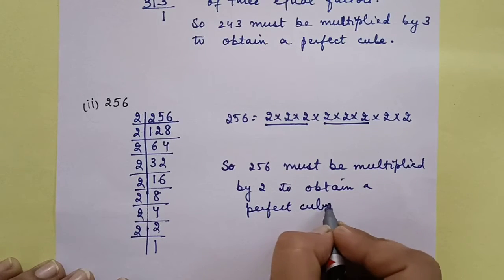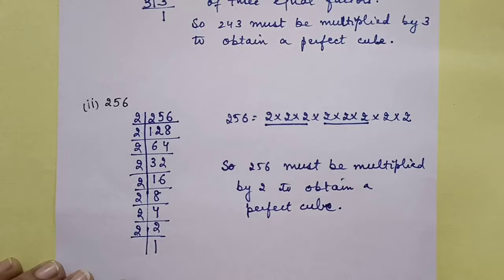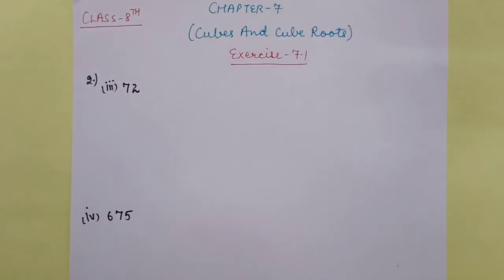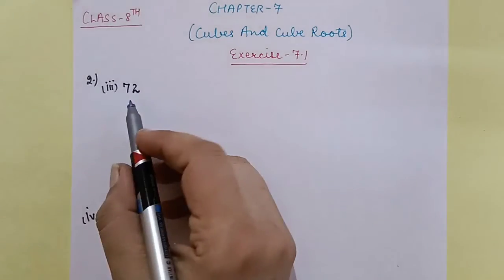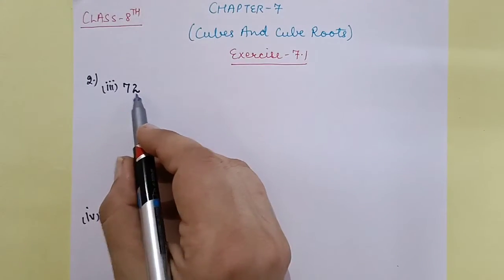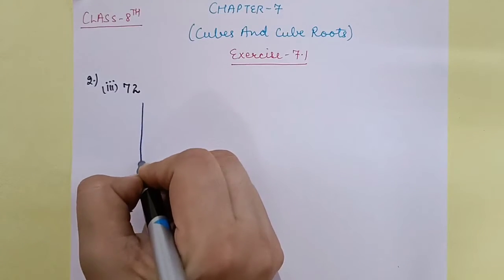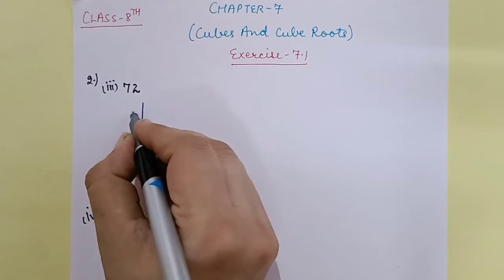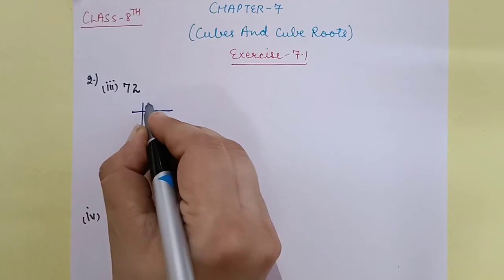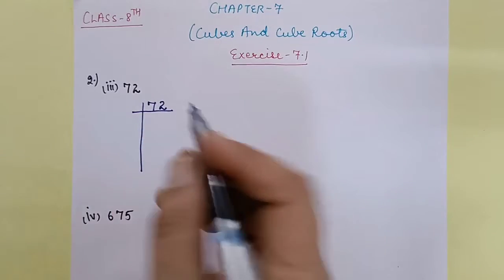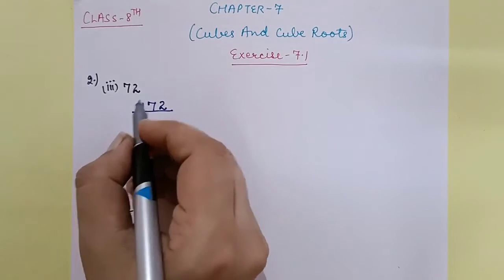Next, let's see the 3rd part. The number is 72. First of all, we will do the prime factorization of 72. 72 will go in the table of 2.